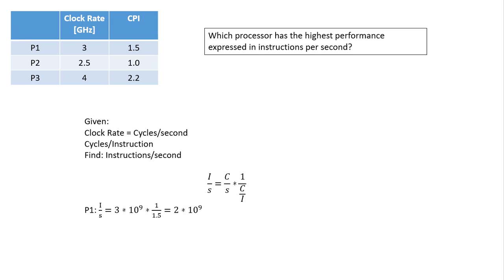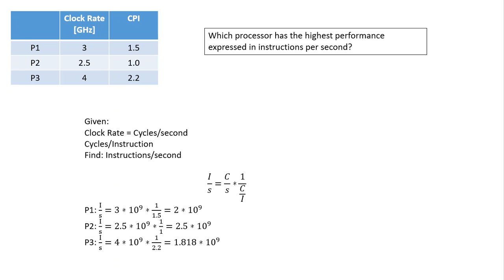For processor P1, instructions per second equals 3×10⁹ (3 GHz) times 1/1.5 cycles per instruction, giving us 2×10⁹ instructions per second. For P2, plugging in its clock rate and CPI gives 2.5×10⁹, a bit faster than P1. For P3, we get 1.818×10⁹ instructions per second. So P2 has the highest performance in terms of instructions per second.